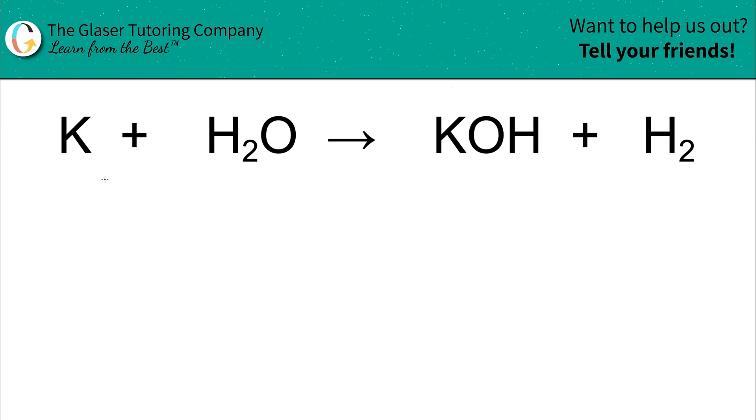So what we're going to do is we literally look at the first element that we see on the left-hand side, and we have potassium. Now the subscript of potassium will tell us how many potassiums we have, so it looks like we have only one potassium on the left-hand side.